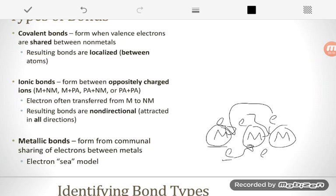So this is called the Electron Sea model. But it makes metals very good conductors because since they don't mind if their electrons move around, they don't care whose electrons they end up with, they can conduct electricity very easily.